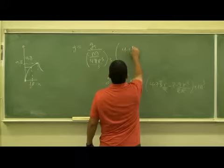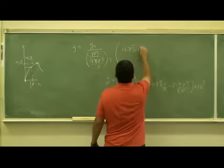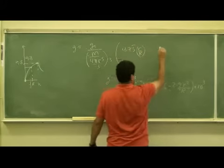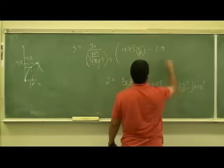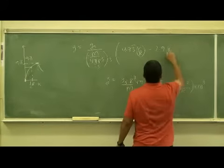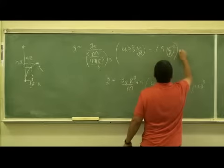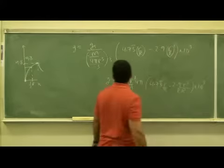I could write as 4.73 with an R over it, R over R, minus 2.9, and then this is R squared over R squared, so R over big R, quantity squared, times 10 to the third.